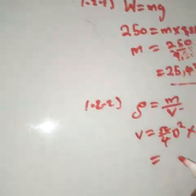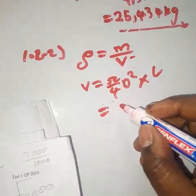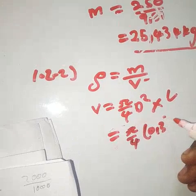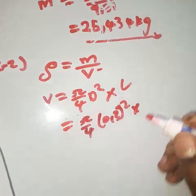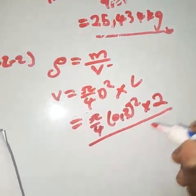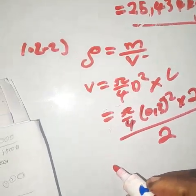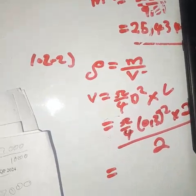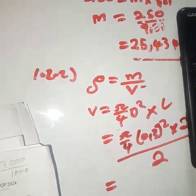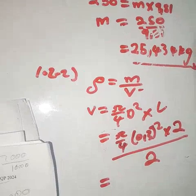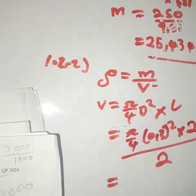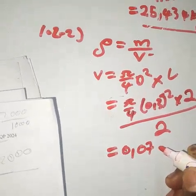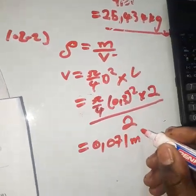So the volume equals π/4 multiplied by (0.3)² multiplied by 2, then the entire result divided by 2 since it is half filled. Taking the calculator: π/4 × (0.3)² × 2, divided by 2, gives us 0.071 cubic meters.